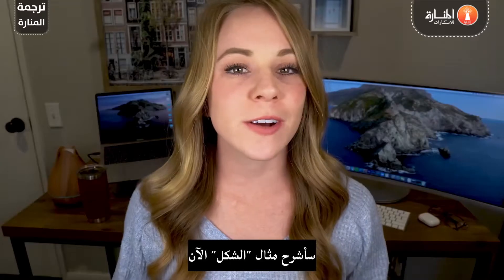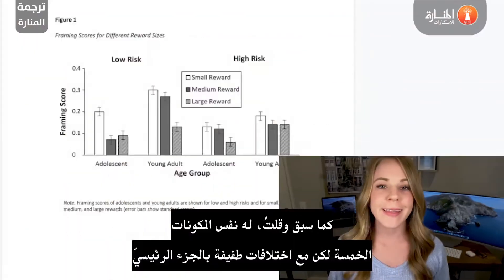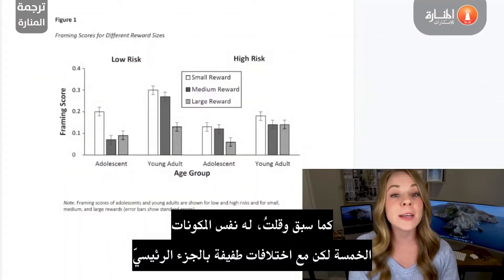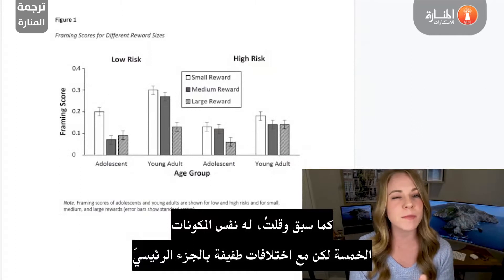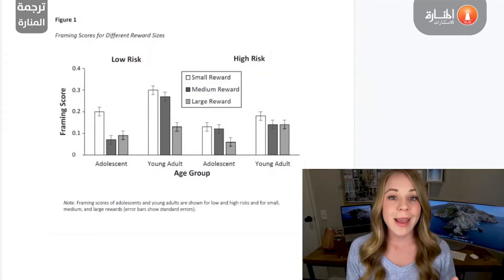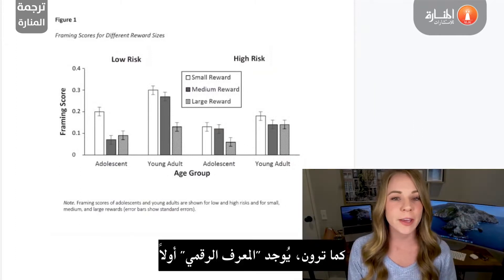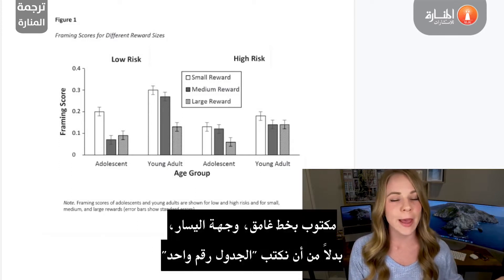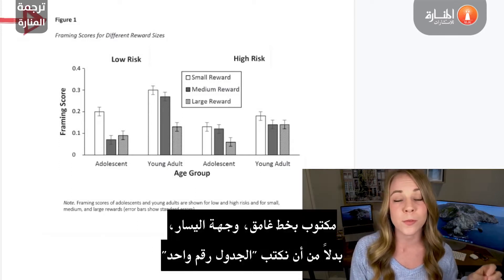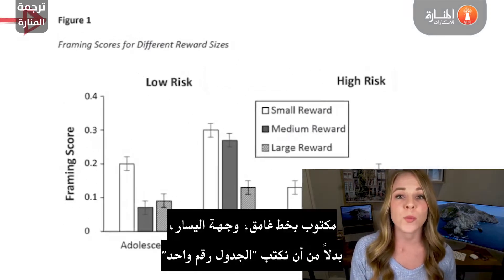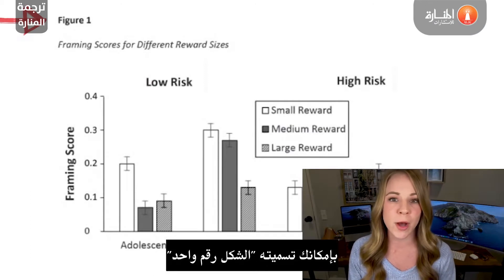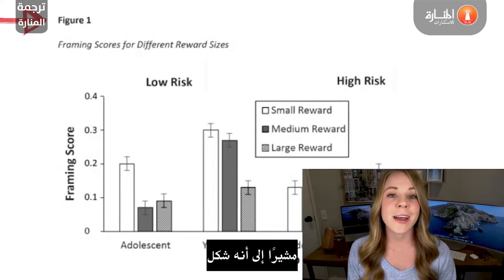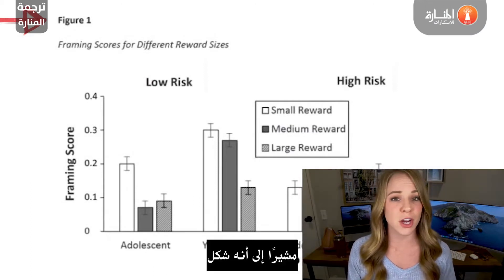Now moving on to the figure example. They contain the same five components with minor differences to the body. You have the number identifier coming first, typed in bold and flush left. Rather than saying Table 1, you would label this Figure 1, signifying that it's a figure.